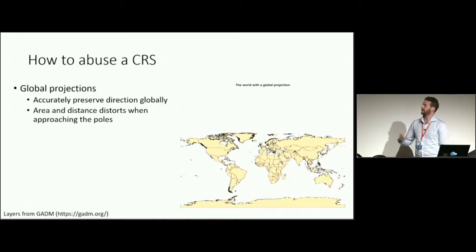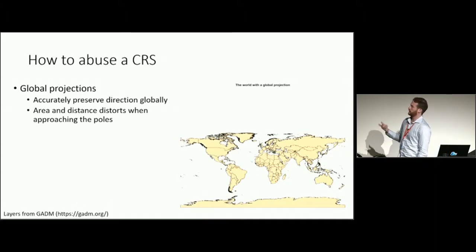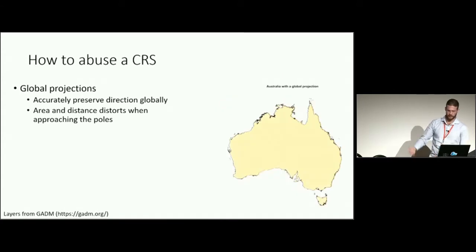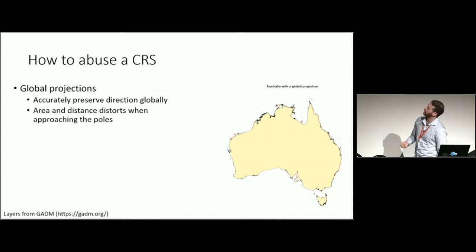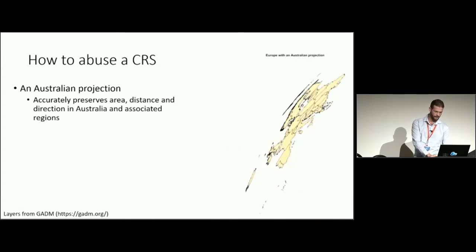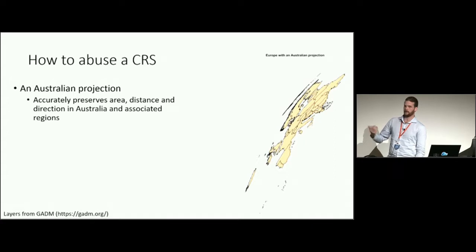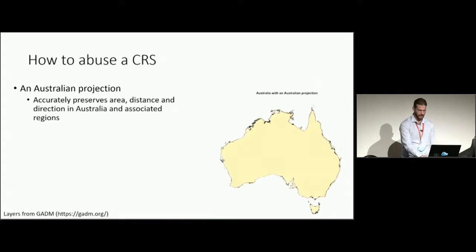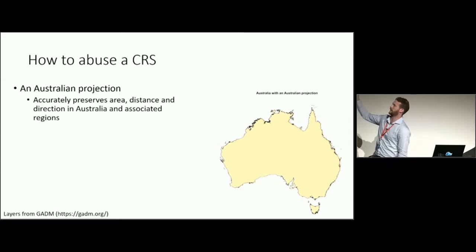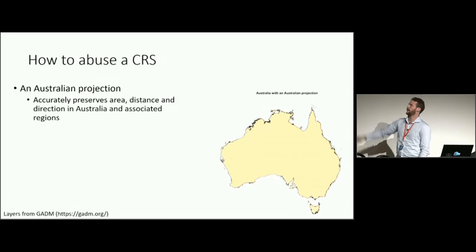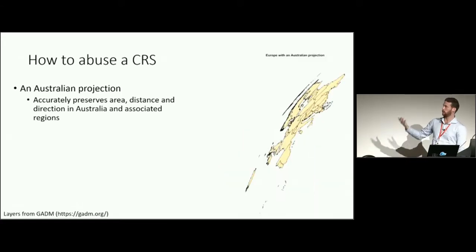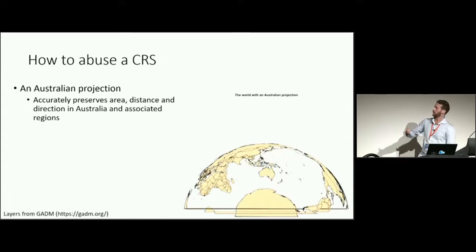To demonstrate what's in a CRS, here's a global one — Google's WGS — and the world looks fine with that projection. But if you move to a different projection, here's one specifically for Australia. That's what Europe looks like if you apply the Australian projection to it — it's completely distorted. If we go back to Australia, the direction, distance, and area are accurately projected. But applying the wrong CRS to Europe creates incredible distortion, and the whole world just looks wrong.